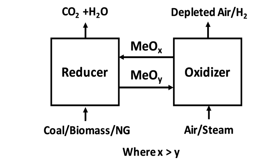In traditional single-stage combustion, the process departs considerably from equilibrium. In CLC, if an appropriate oxygen carrier is chosen, both redox reactions can be made to occur almost reversibly and at relatively low temperatures. Theoretically, this allows a power station using CLC to approach the ideal work output for an internal combustion engine without exposing components to excessive working temperatures.